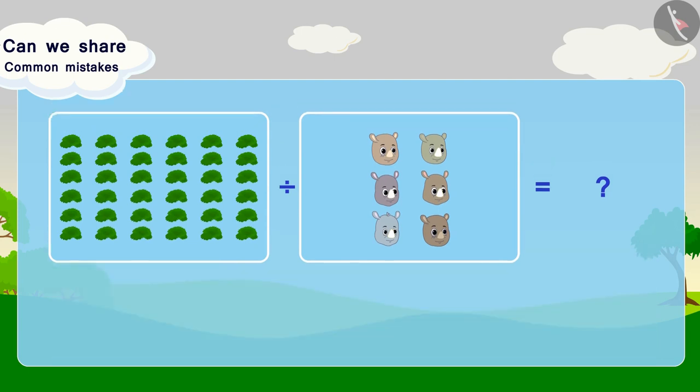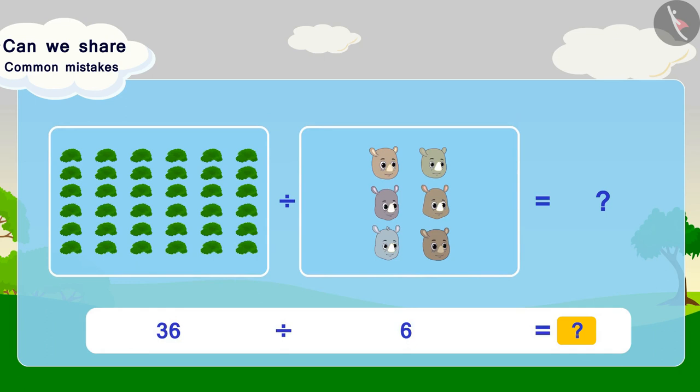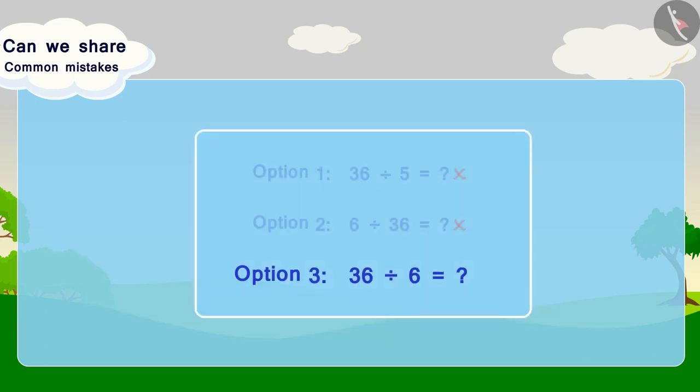We have divided 36 clusters into 6 friends. Thus, it is the right option.